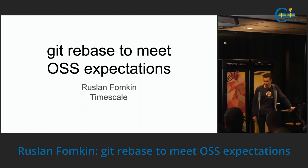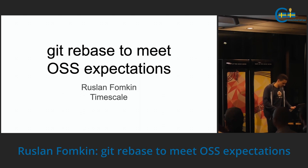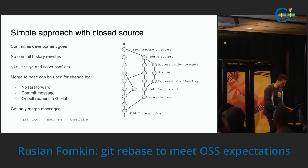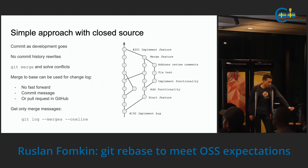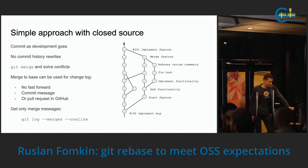Unfortunately, we don't develop in C++, but in C, as PostgreSQL mainly stays on this. So this is more like a lightning talk with a demo, so it will take a longer time than our usual lightning talk. Before I go to the open source way of having a commit history, I would like to present how for closed source it can look.